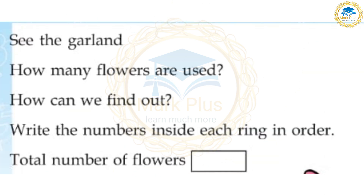See the garland. How many flowers are used? How can we find out? How many flowers? Put the numbers inside each ring in order. Total number of flowers: I will be using 200 flowers.